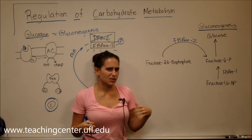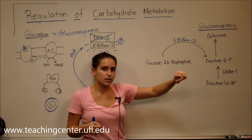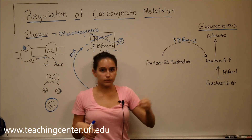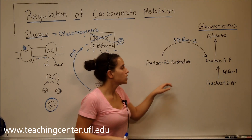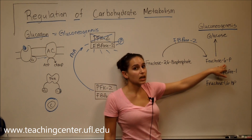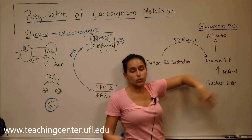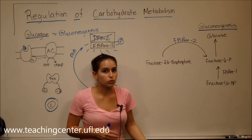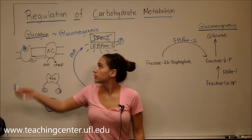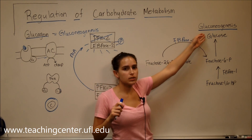How do we know fructose bisphosphatase 2 takes off that phosphate? Because it's a phosphatase — phosphatases remove phosphates from molecules. Once converted to fructose 6-phosphate, it goes on to make glucose through gluconeogenesis. When we have low blood sugar, glucagon is released, making glucose through gluconeogenesis.